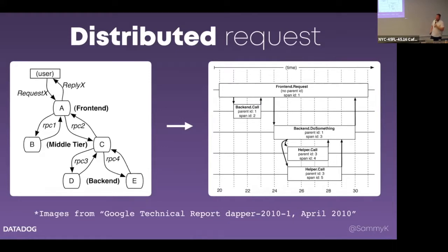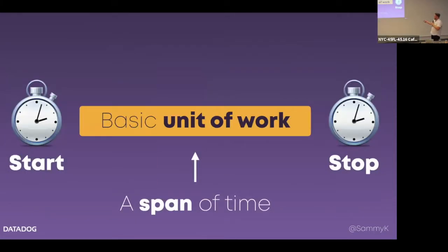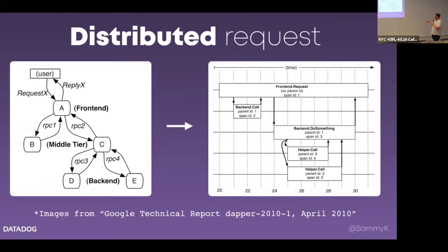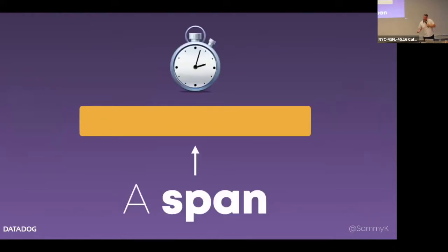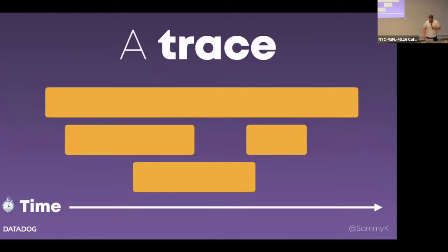Maybe there's a certain service that's really slow. In this picture, these boxes represent a unit of work which happens over a timeline — a span of time. So a good word for this might be a span, and that's exactly what it's called. Now in a trace, we're going to have multiple spans, and when you put a bunch of spans together, you get a full trace.